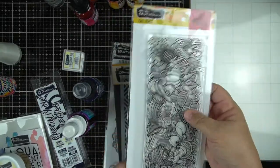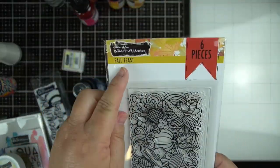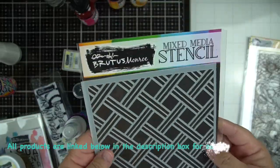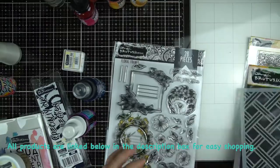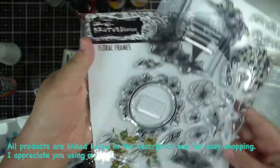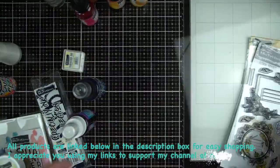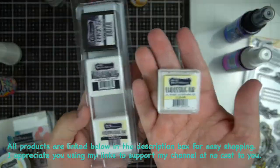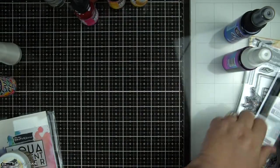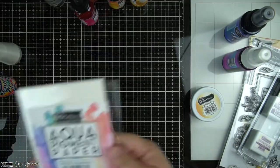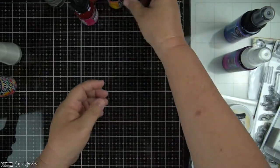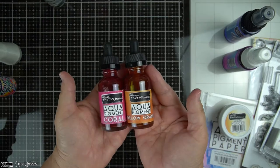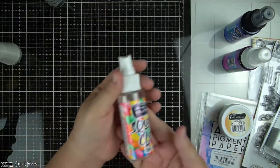Here's the products used. Fall Feast Slimline Stamp Set from Brutus Monroe, Basket Weave Stencil, Floral Frames, Chroma Mist in Lilac and Cobalt Blue, Embossing Ink in the Small Cube, Gilded Embossing Powder, Aqua Pigment Paper Watercolor Cardstock, and I'm using these Aqua Pigments. Everything will be listed below for easy shopping.